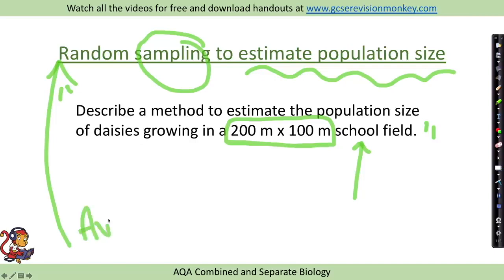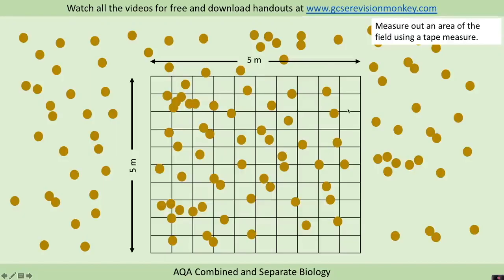So we need to have a method of sampling that is completely random. And if they talk about why in the exam, it is to avoid bias. So as we said, we can't count the number of daisies in the whole 200 meter by 100 meter field. So instead, we measure out an area of the field using a tape measure.